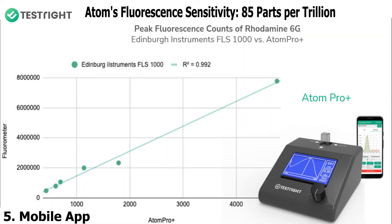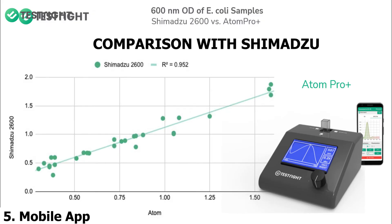Thus we saw how Atom can be used for absorbance, fluorescence, and reflectance — all three in a single package. Its fluorescence sensitivity is down to 85 ppt (parts per trillion) for rhodamine B dye. Its absorbance is compared against international brands like Shimadzu, and the results have been published on screen, showing very good linearity.